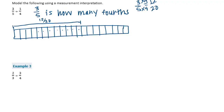We want to know how many one-fourths are in twelve-twentieths. Let's convert one-fourth into twentieths: one-fourth times five equals five-twentieths. Now let's find groups of five-twentieths: one, two, three, four, five — that's one group. One, two, three, four, five — that's two groups.